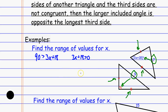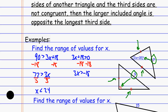I'll solve each of these inequalities. For the first one, I subtract 18 from each side, giving me 72 > 3x, then divide each side by 3, so x < 24. For the next one, I solve 3x + 18 > 0: subtract 18, then divide each side by 3, finding x > -6. So the range of values is that x has to be between negative 6 and positive 24.